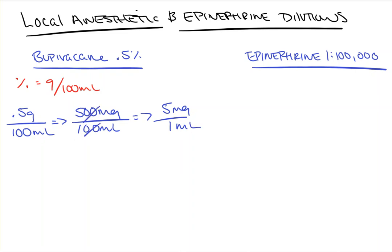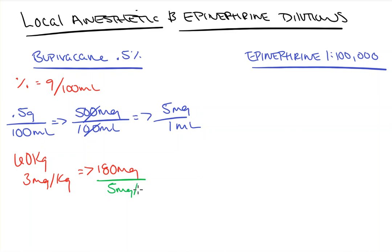You'll see questions like: you have a patient who is 60 kilograms, and you want to know how many cc's of local anesthetic you can give before reaching the toxic dose. The toxic dose of bupivacaine is 3 milligrams per kilogram, so this person can receive 180 milligrams. Dividing 180 by 5 mg per ml gives you 36 ml.